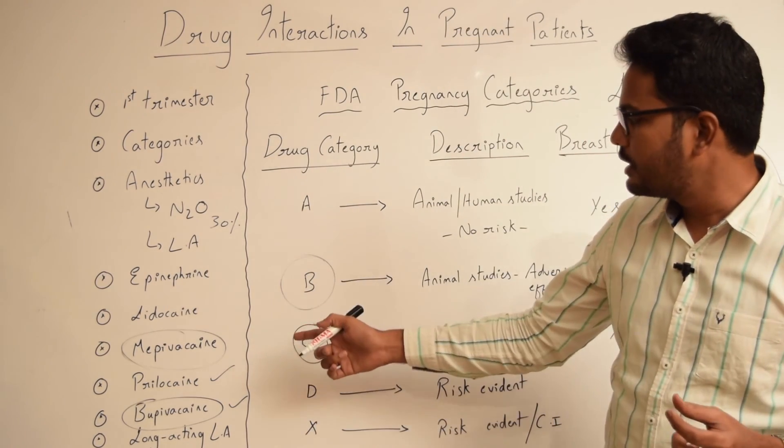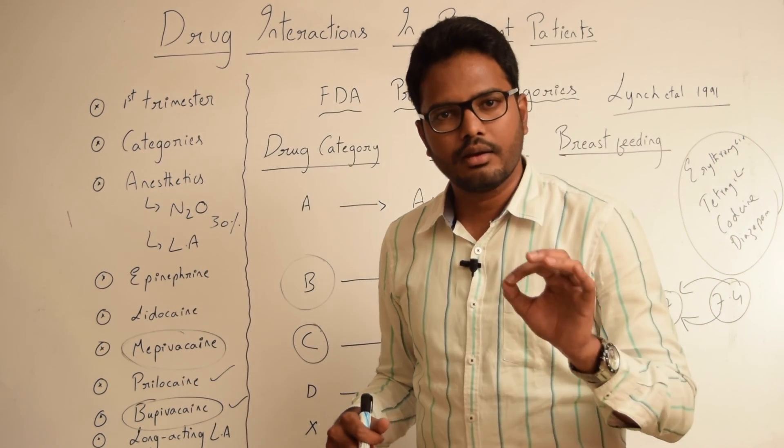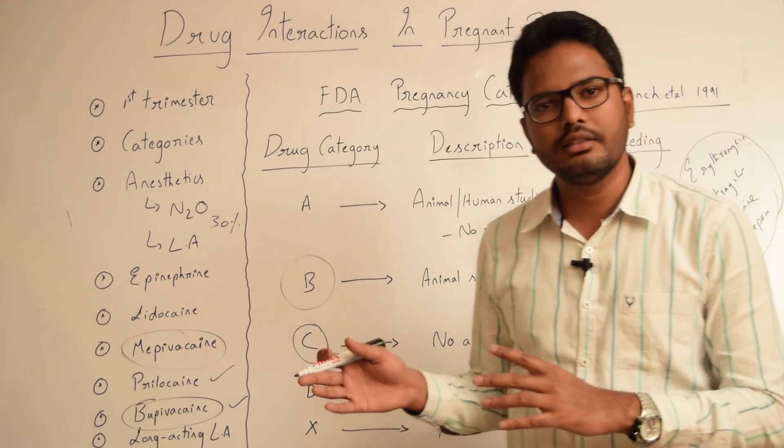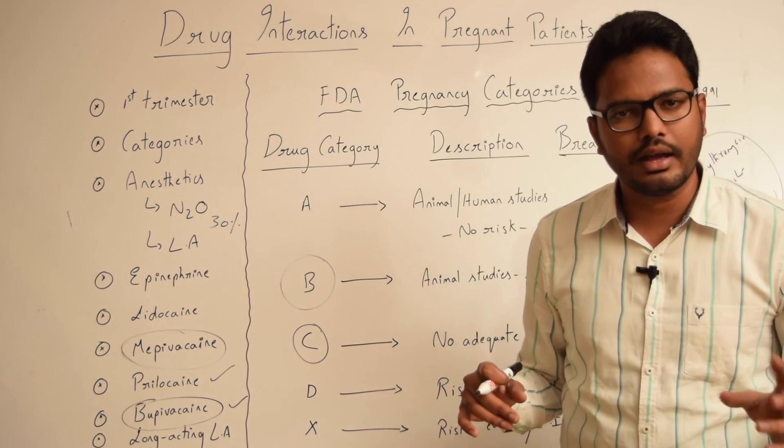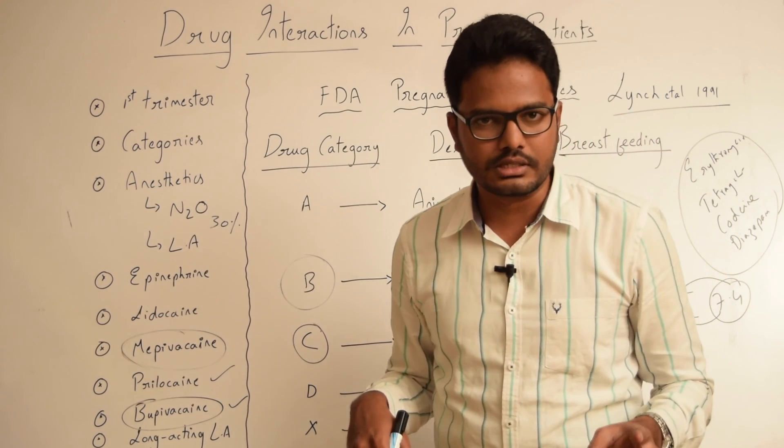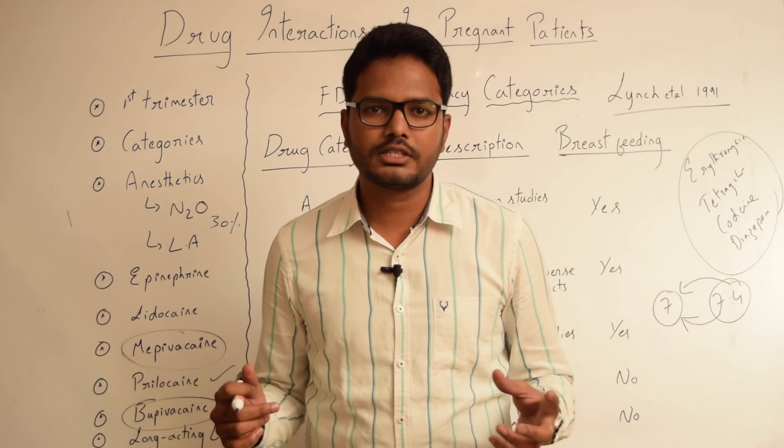Whereas, Mepivacaine, Articaine, Bupivacaine fall under pregnancy category C. And most importantly, Mepivacaine 3% has potential of causing fetal bradycardia. Hence, it should be avoided in pregnant patients. So, these are some of the drug interactions within pregnant patients.